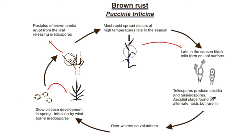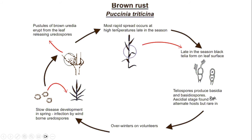In the disease cycle, over-summering occurs on volunteer plants. It is a slow disease in spring. Wind carries urediniospores onto pustules. Brown uredinia on leaves release spores and secondary infection causes the most rapid spread, which occurs at high temperatures later in the season.